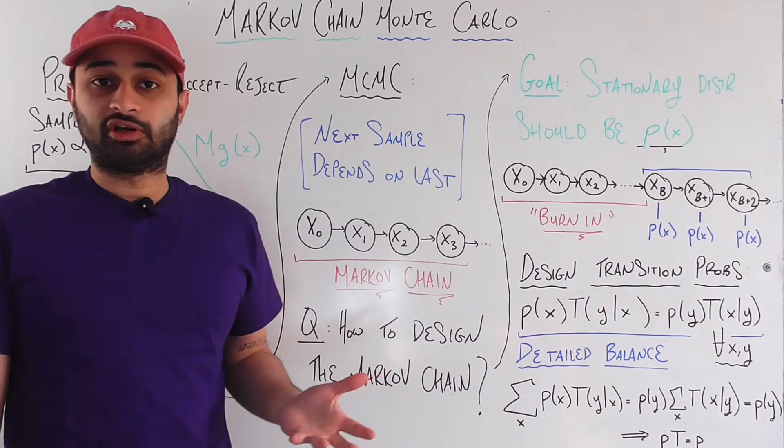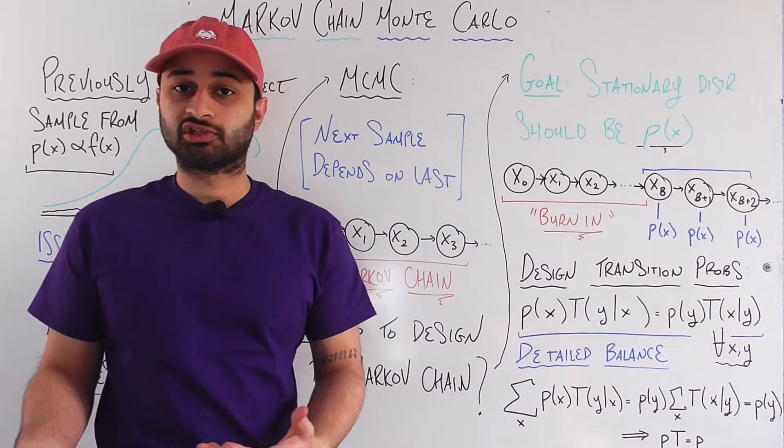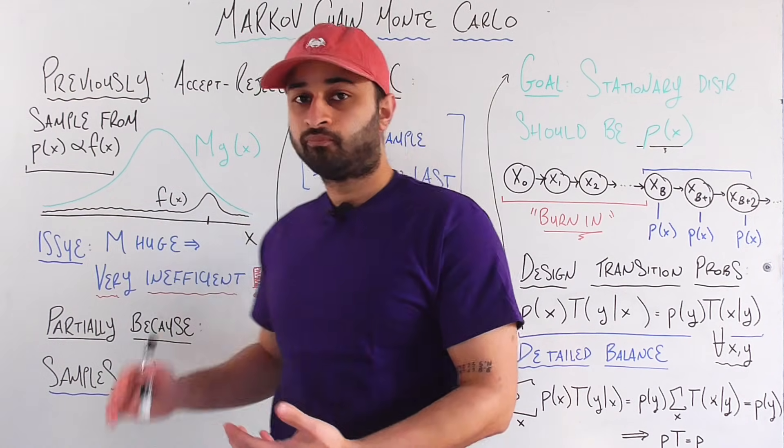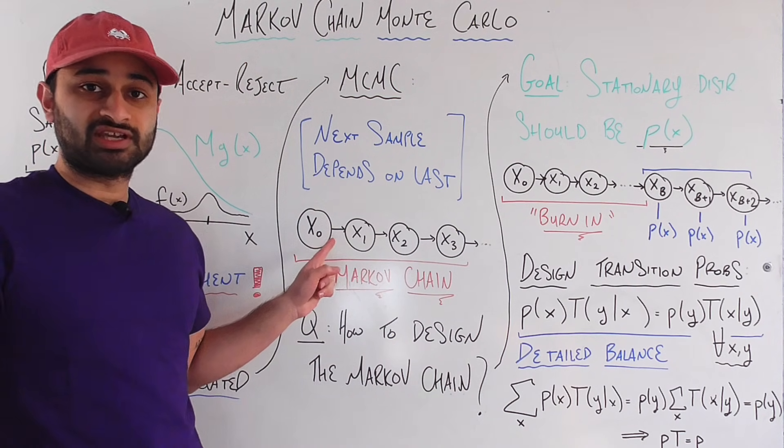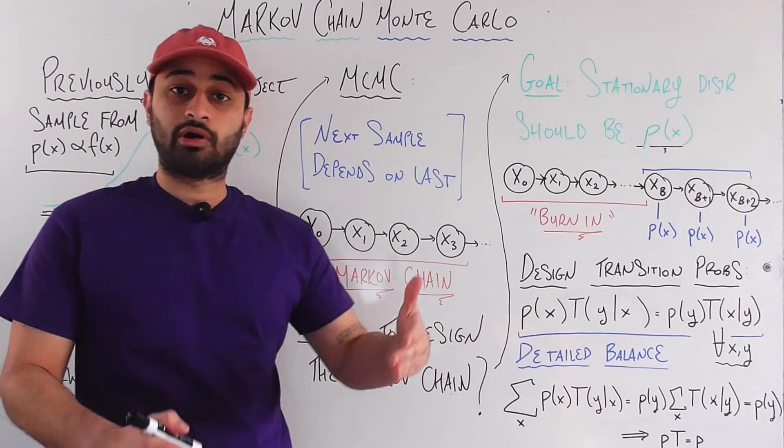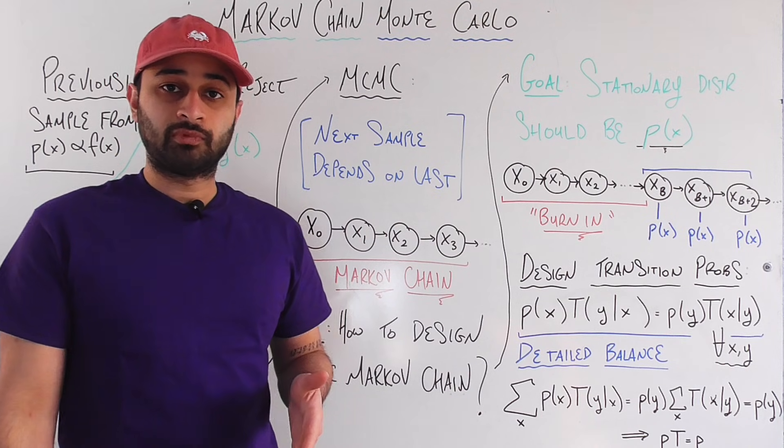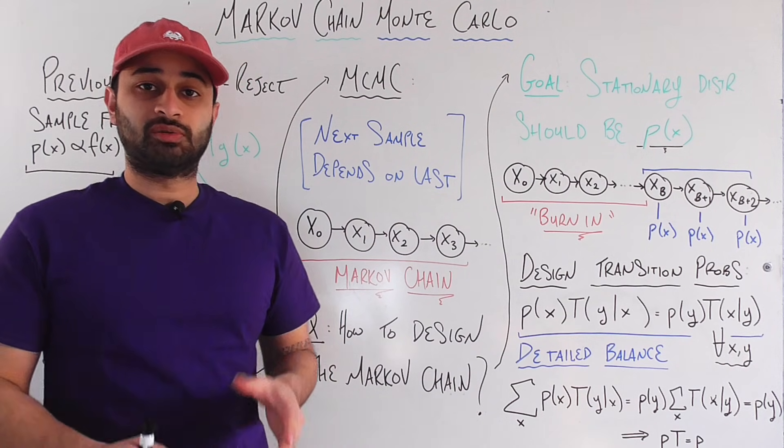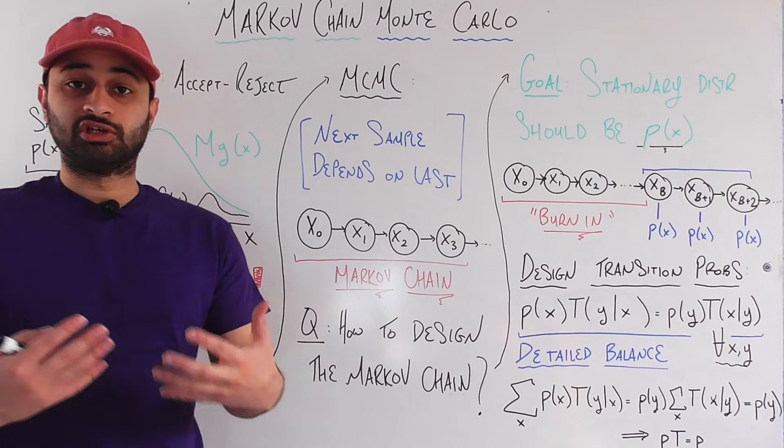We have some initial sample, it could be anything, so X zero is just the first sample, the first state of the Markov chain, so that could be anywhere on this line. Now looking at the first sample we generate the second sample, looking at the second sample we generate the third sample, looking at the third sample we generate the fourth, and so on and so on and so on. So MCMC proceeds by looking at the previous sample and then using that to make a decision about where the next sample should be. And that's why it's called Markov chain Monte Carlo.